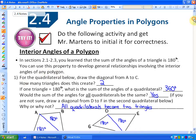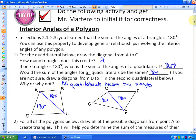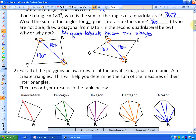So step 1 for activity 1 says, for the quadrilateral below, draw the diagonal from A to C, which is what I have already done. And this creates two triangles. So here's the idea. If one triangle is 180 degrees, the sum of the angles of a quadrilateral is 360, because that's 180 times 2. And the next question says, would the sum of the angles for all quadrilaterals be the same? And the answer is yes, because if I look at this next quadrilateral, if I draw a diagonal, it still creates two triangles. So why or why not? It's because all quadrilaterals become two triangles when drawing a diagonal. So that is, all quadrilaterals are 360 degrees.